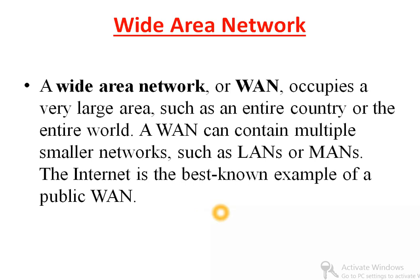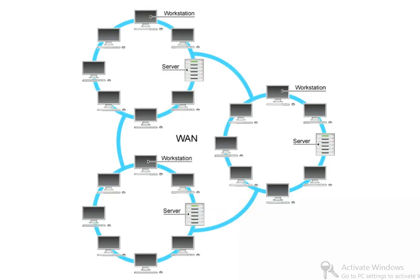Another type is Wide Area Network. A WAN occupies a very large area such as an entire country or the entire world. A WAN can contain multiple smaller networks such as LANs or MANs. The internet is the best known example of a public WAN. For example, we have one LAN here, another LAN, and another LAN, and these are all connected with each other forming a bigger network called a WAN or Wide Area Network. The internet is the best example — it is a network of networks.